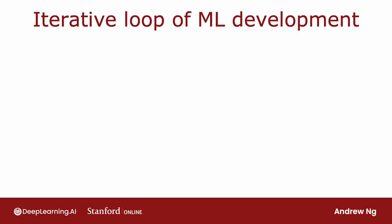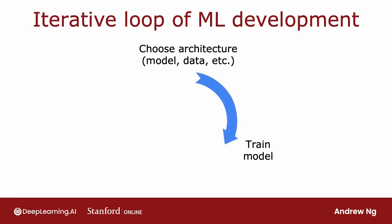This is what developing a machine learning model will often feel like. First, you decide on what is the overall architecture of your system, and that means choosing your machine learning model as well as deciding what data to use, maybe picking the hyperparameters and so on. Then, given those decisions, you would implement and train a model.